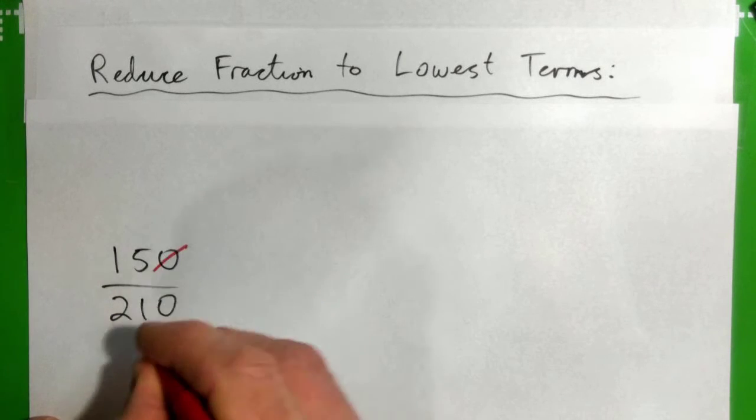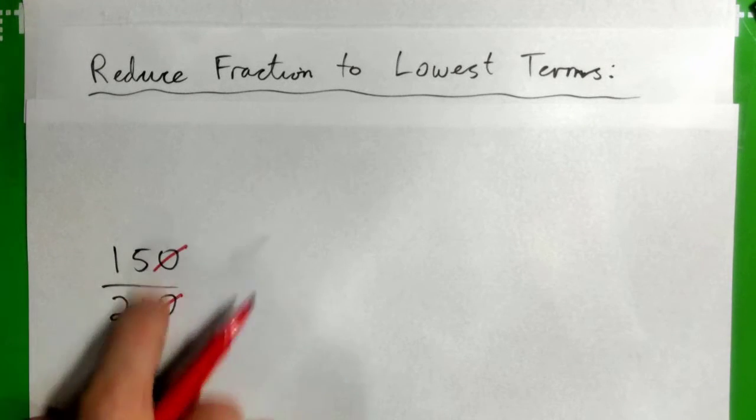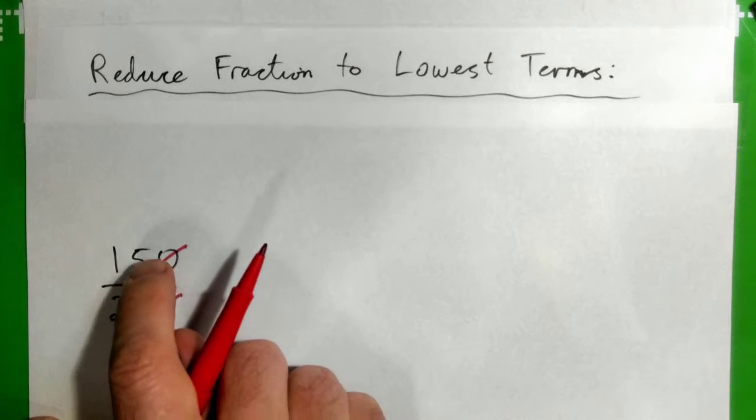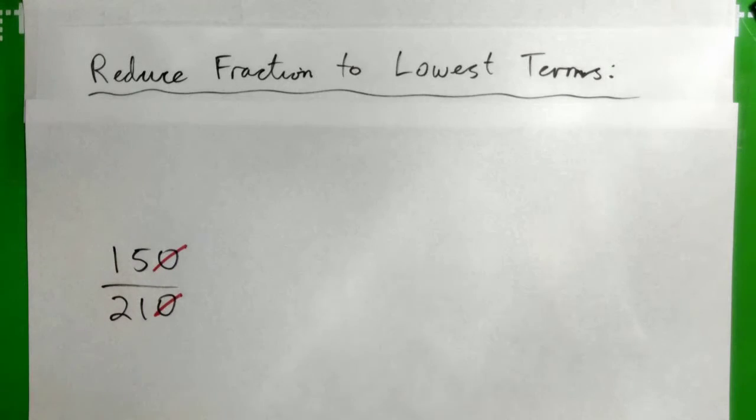So what goes into both? Can we reduce this further? Yes, reduce it further. What goes into both 15 and also 21? Yes, 3 goes into 15 five times.